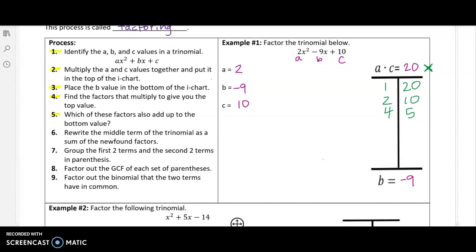So in the i chart, it's very important to note that the b value is really important. Because after we have come up with all of our factors of 20 at the top, we now need to find out which of those factors add up to equal negative nine. One plus 20 is 21. Those do not add up to negative nine. Two plus 10 is 12. Four plus five is close. It's positive nine though. So that doesn't work for us either.